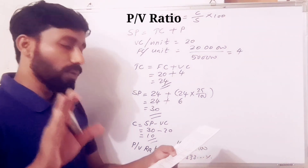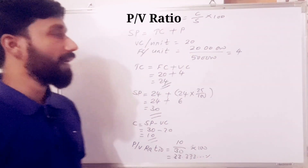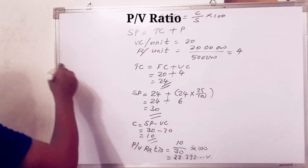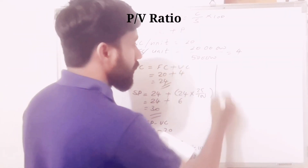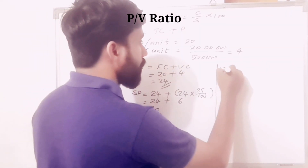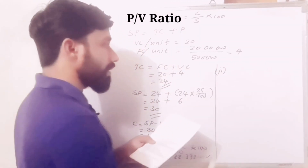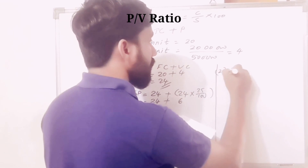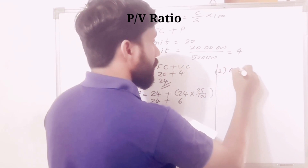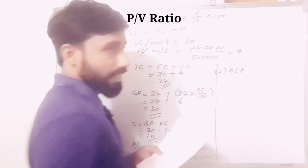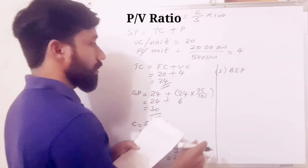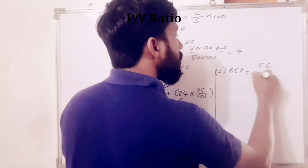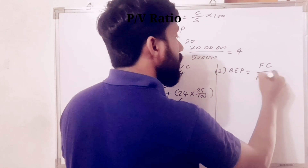Question 1 answer: PV ratio is 33.33%. Now for question 2, we calculate the break-even point. Break-even point is equal to fixed cost divided by PV ratio.